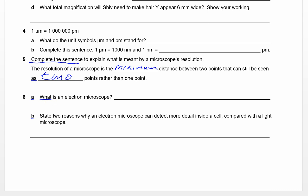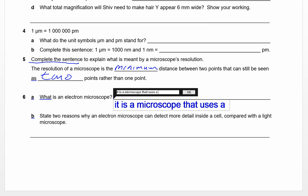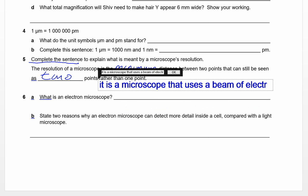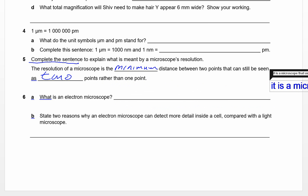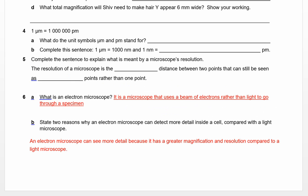What is an electron microscope? That's a fairly open question. I've given an answer to the last two questions. What is an electron microscope? All we need to say here is that it uses a beam of electrons rather than light to go through the specimen.